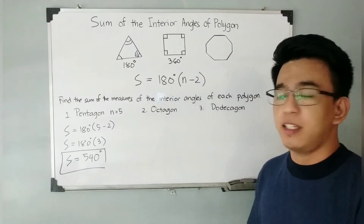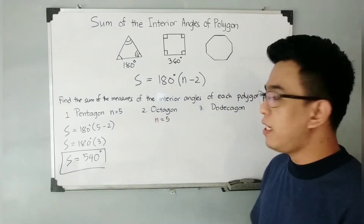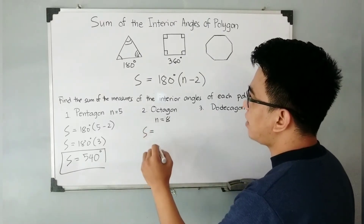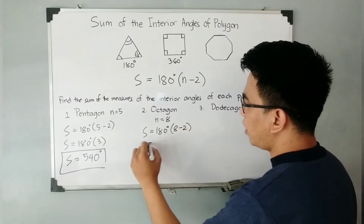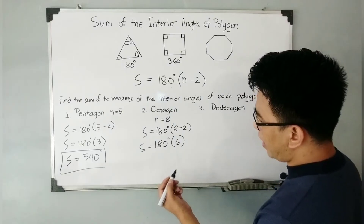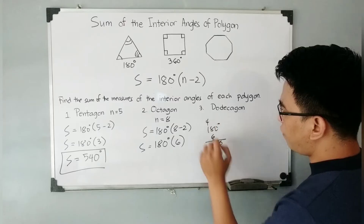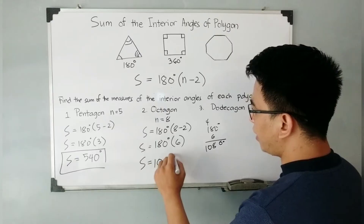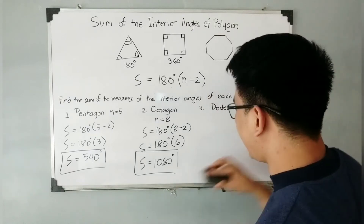Let's move on to item number 2: octagon. This is an eight-sided polygon, meaning N = 8. So S = 180 degrees times (8 - 2), which gives 180 degrees times 6. Multiplying 180 by 6 gives a total of 1,080 degrees. The sum of the interior angles of a regular octagon is equal to 1,080 degrees.